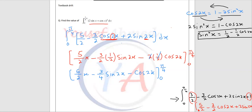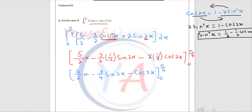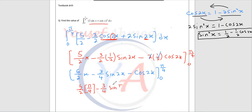Now we need to replace the values to get the final result. This question was out of 6 marks. So here I will replace π/4: you have 5 over 2 multiplied by π/4, and then minus 3 over 4 times sine of 2 times π/4 — which is sine of π/2. Then minus cosine of 2 times π/4, which is cosine of π. So from this bracket: 5 over 2 times π/4 gives π over 8, minus 3 over 4 — sine π/2 is 1, so minus 3 over 4. And cosine π gives zero, so that term is zero.